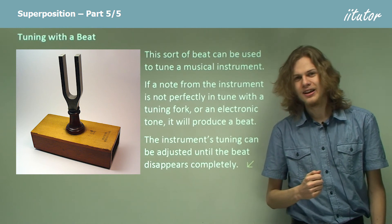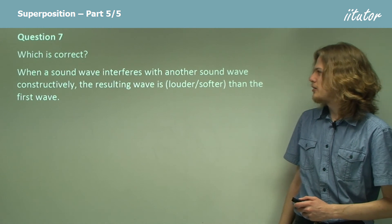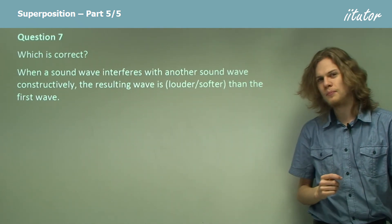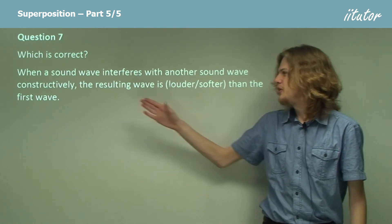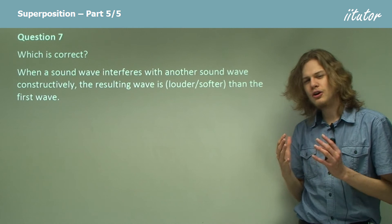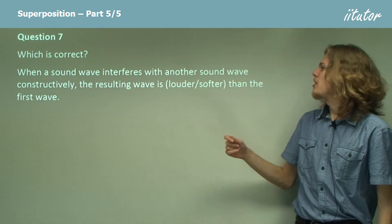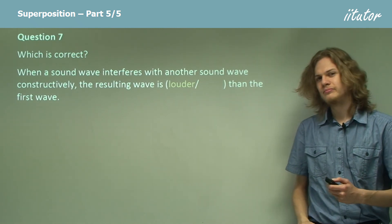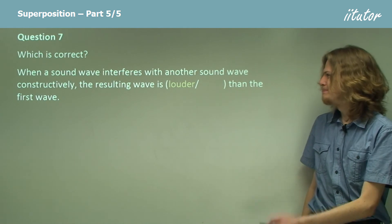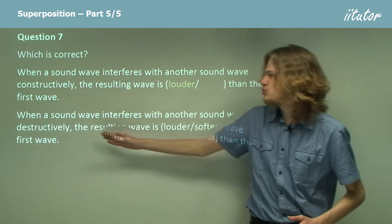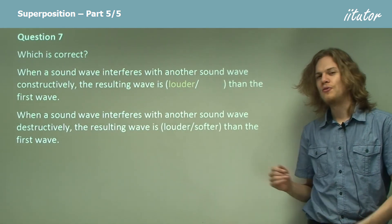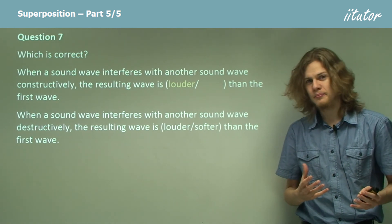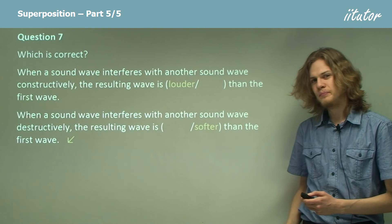When a sound wave interferes with another sound wave constructively, the resulting wave is louder than the first wave. The name 'constructive interference' gives it away — we're constructing a wave that's bigger, so the resulting wave is louder. And when a sound wave interferes destructively, the waves are destroying or canceling each other out, which means the resulting wave is softer than the first wave.